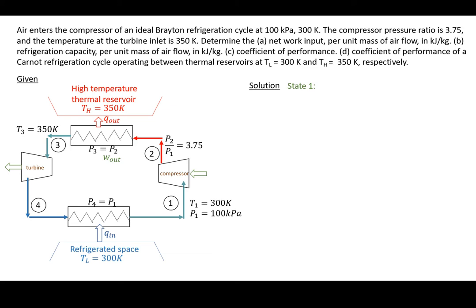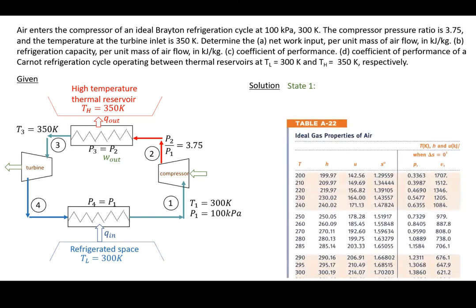So state one, I know the temperature is 300 Kelvin. And I know that I've got air, which behaves as an ideal gas. And it only depends on temperature to fix your state. So you only need one property. So at 300 Kelvin, my H value is 300.19 kilojoules per kilogram.